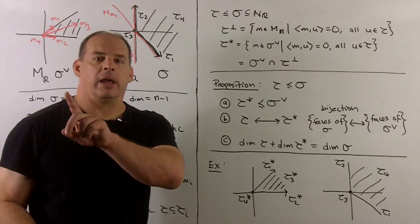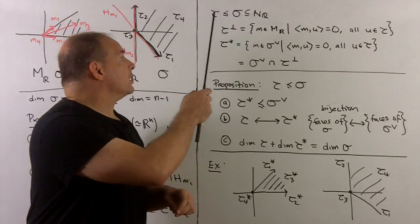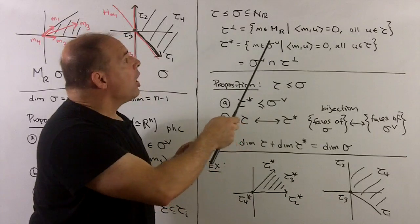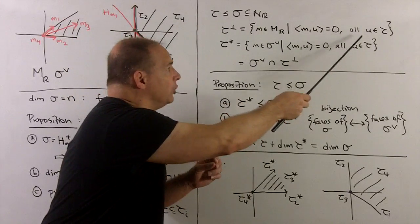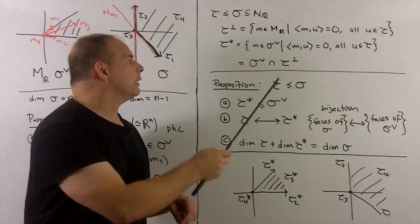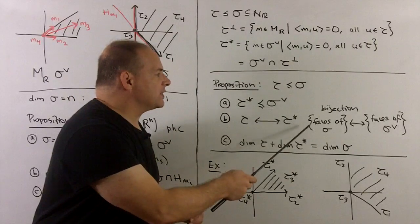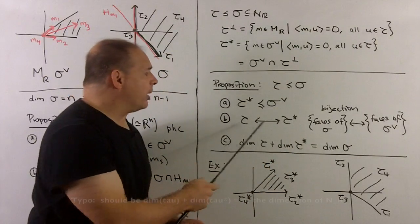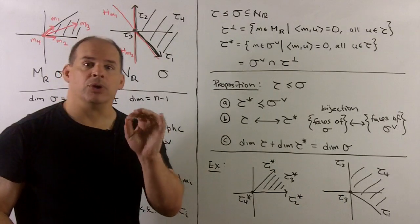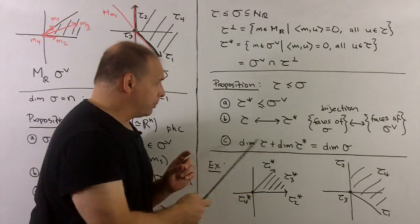How do we connect the faces of sigma to the faces of sigma-check, the dual? We need some definitions. Suppose tau is a face inside sigma inside N_R. We define tau-perp as all m in M_R perpendicular to all u in tau simultaneously. Tau-star is then tau-perp intersected with the dual of sigma. Proposition: tau-star is a face of the dual of sigma; there is a bijection between faces of sigma and faces of sigma-check given by passing between tau and tau-star; and the dimension of tau plus the dimension of tau-star equals the dimension of sigma.